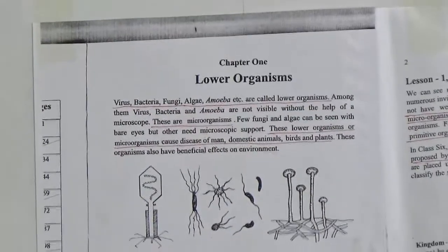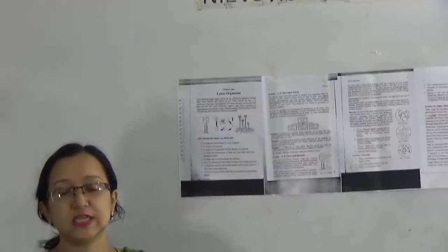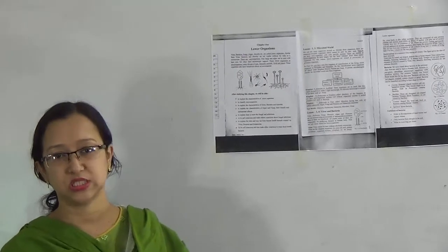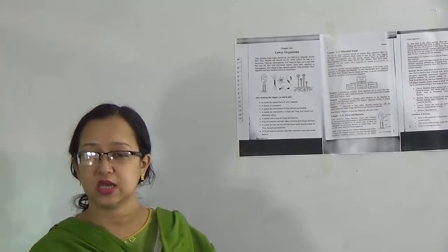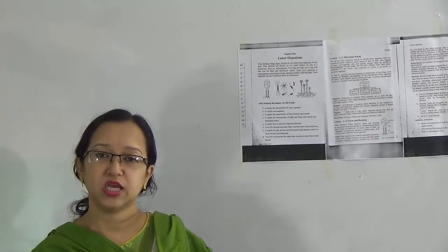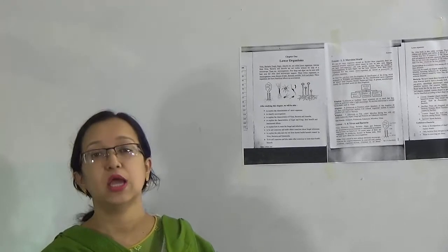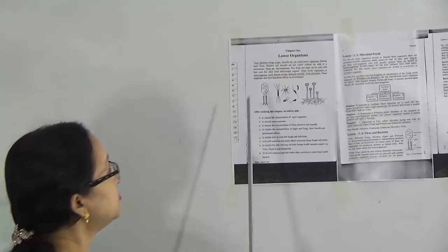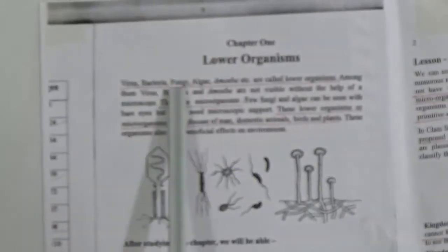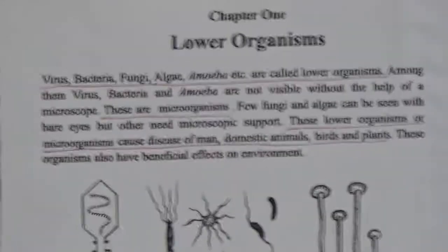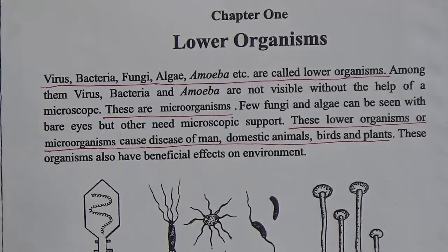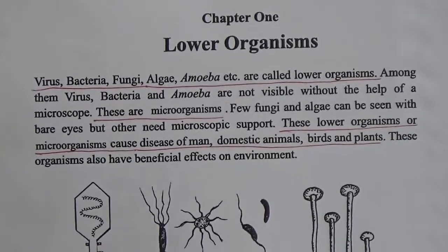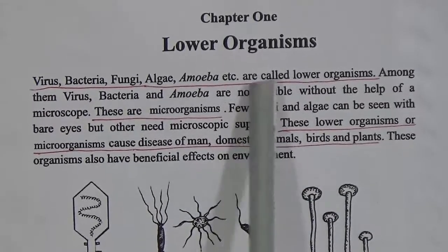The name of our chapter is 'Lower Organisms.' Lower organisms means the small organisms which we cannot see with our bare eyes; we use a microscope to see them. They create various kinds of diseases in human bodies, animal bodies, and plant bodies, and also they are helpful in different ways. In this chapter we will discuss about virus, bacteria, fungi, algae, amoeba, etc., which are called lower organisms.